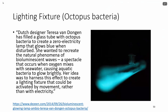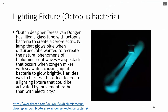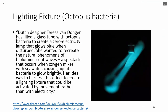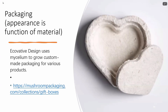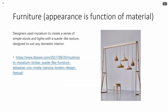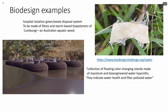This one is so cool: a glass tube filled with octopus bacteria to create a zero-electricity lamp that glows blue when disturbed. The Ecovative design uses mycelium to grow custom-made packaging for various products — you could absolutely protect this under a utility patent as well as under a design patent. Similarly, these floating color-changing islands made of mycelium and bioengineered water hyacinths that indicate water health and filter polluted water — you could protect them with utility patents and also protect their appearance with design patents.